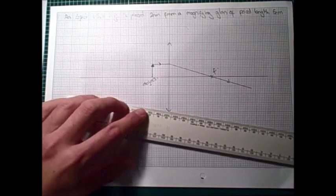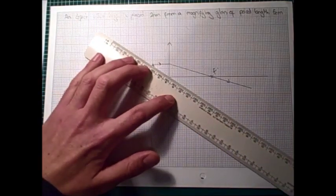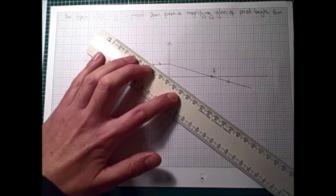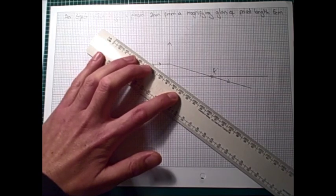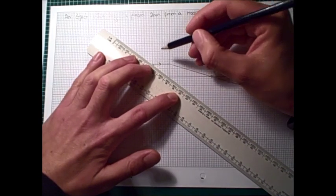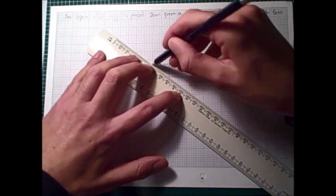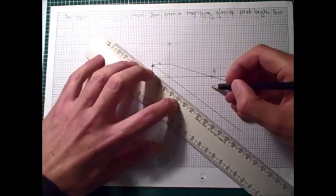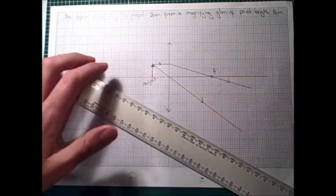Then our other special ray, we draw starting from the top of the object, going straight through the centre of the lens. And as before, this ray does not change direction.